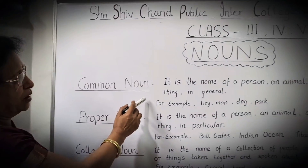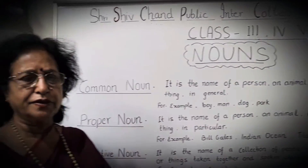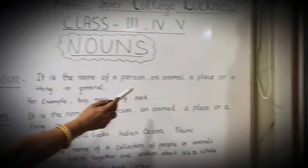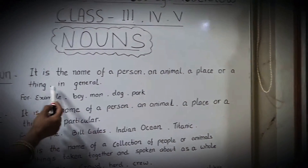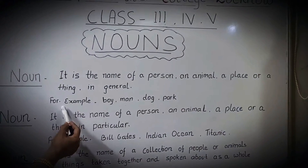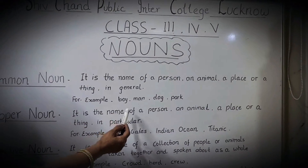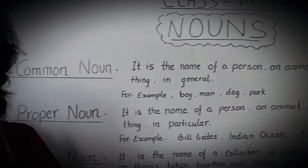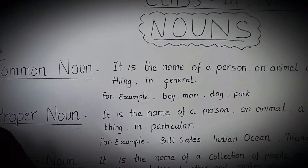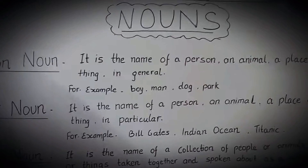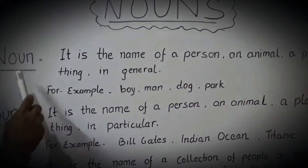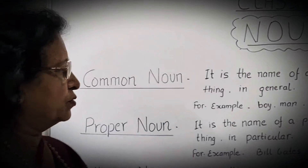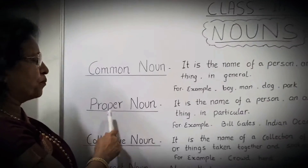First is common noun. As the name suggests — common — it is the name of a person, animal, or place in general. For example: boy, man, dog, park, boat, almirah, school — anything, whatever you see around you in general, that is a common noun. Whatever things you see around you, they are all common nouns.